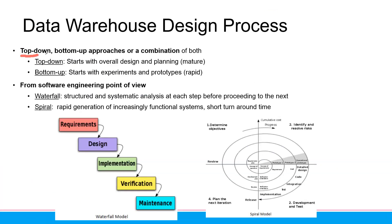The first design process is top-down — maybe from the CEO down to the operational level of the company. It starts with the overall design and planning: you already know the framework, you already know the architecture, and then you just implement. Usually big companies have this kind of design process.